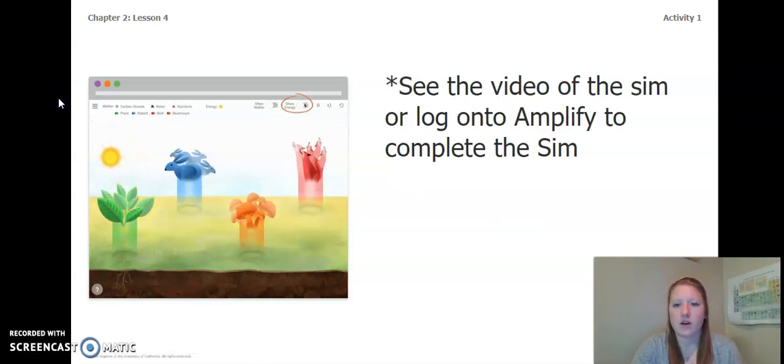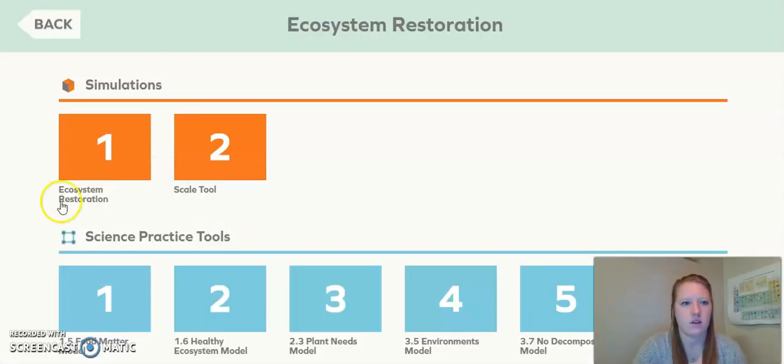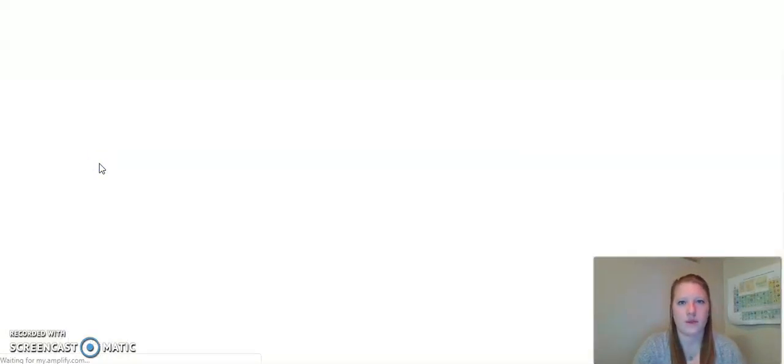You can see the video of the simulation, or you can log on to Amplify to complete the simulation yourself. To log on to the simulation yourself, you're going to log on to Amplify. You are going to click on ecosystem restoration unit, and then you are going to click the orange box with the number one to access the simulation. I'm going to go ahead and do this now. I'm going to click on the number one and wait for it to open.